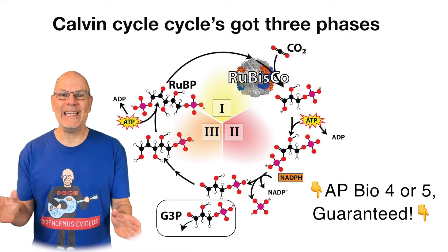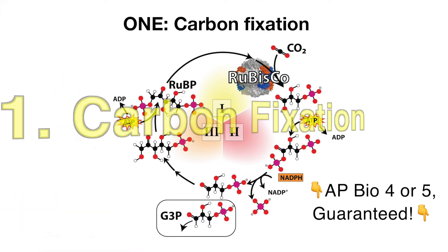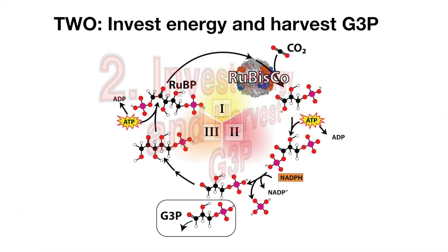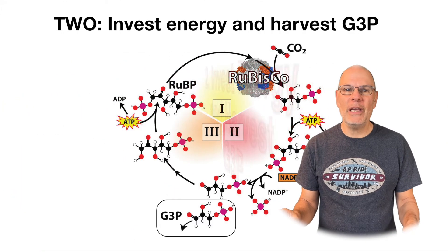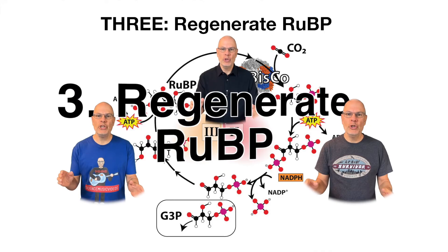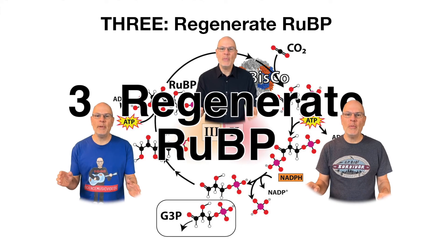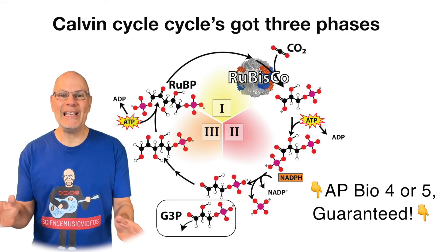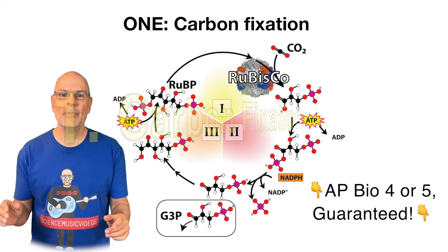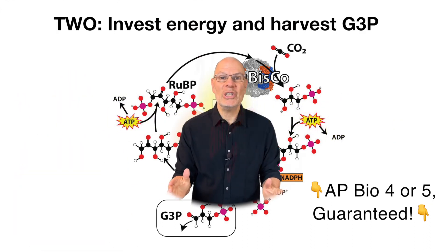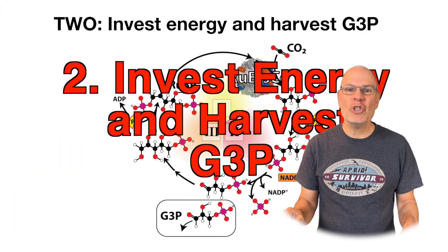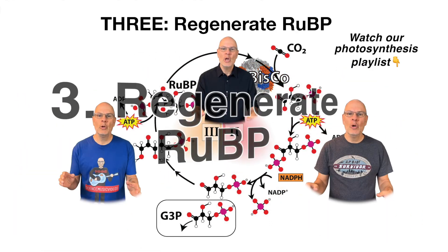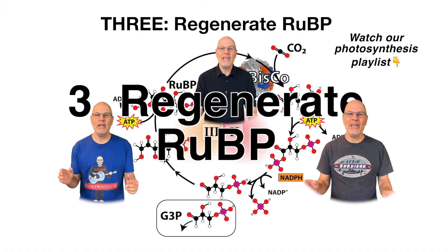Calvin Cycle's got three phases. One, carbon fixation. Two, invest energy, harvest G3P. Three, regenerate R-U-B-P.